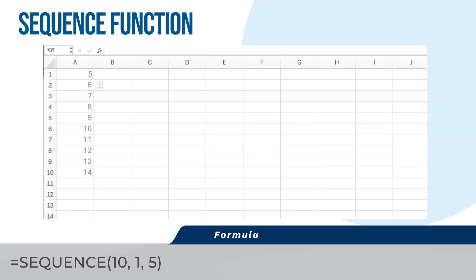Incrementing by a specific step. Select the cell where you want the sequence to begin. Enter the formula equals Sequence 10, 1, 1, 2 and press Enter. The result will be a sequence of numbers from 1 to 19 in column F, increment by 2.